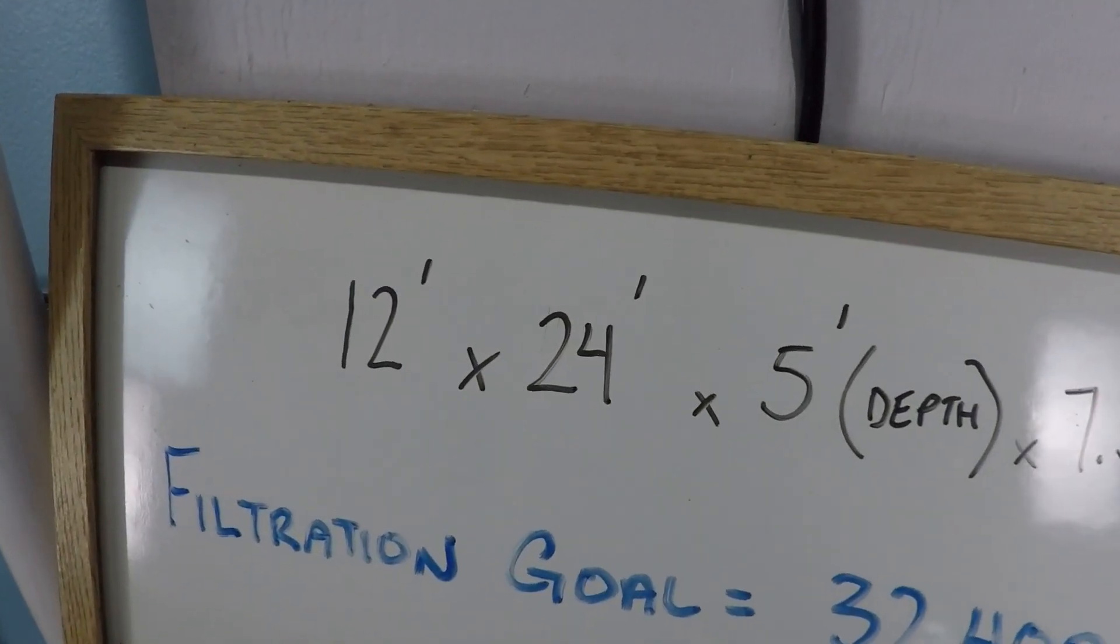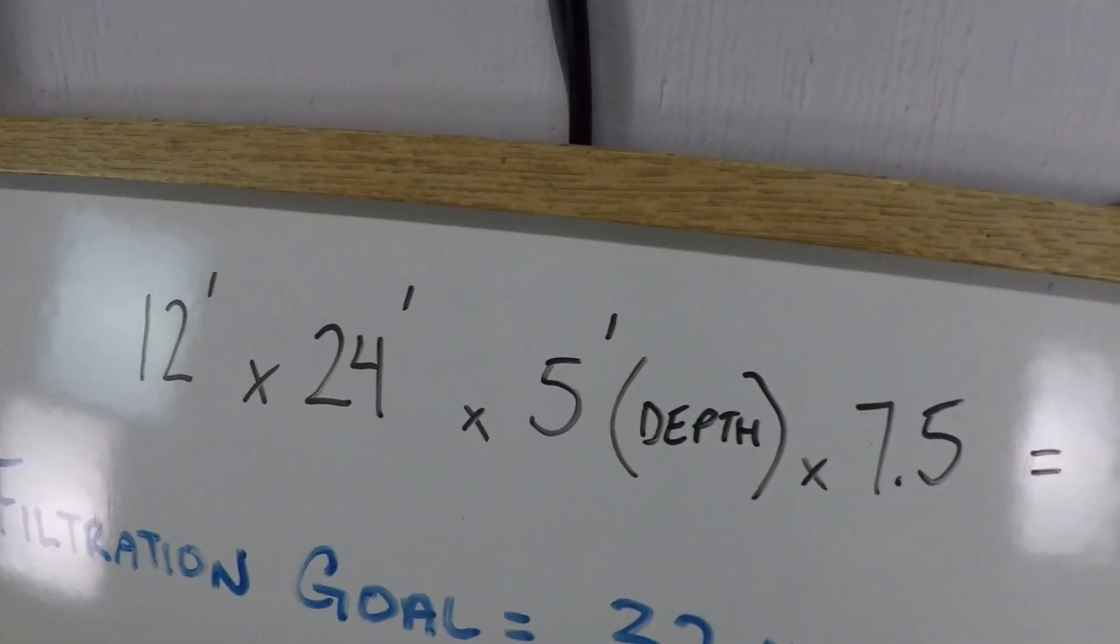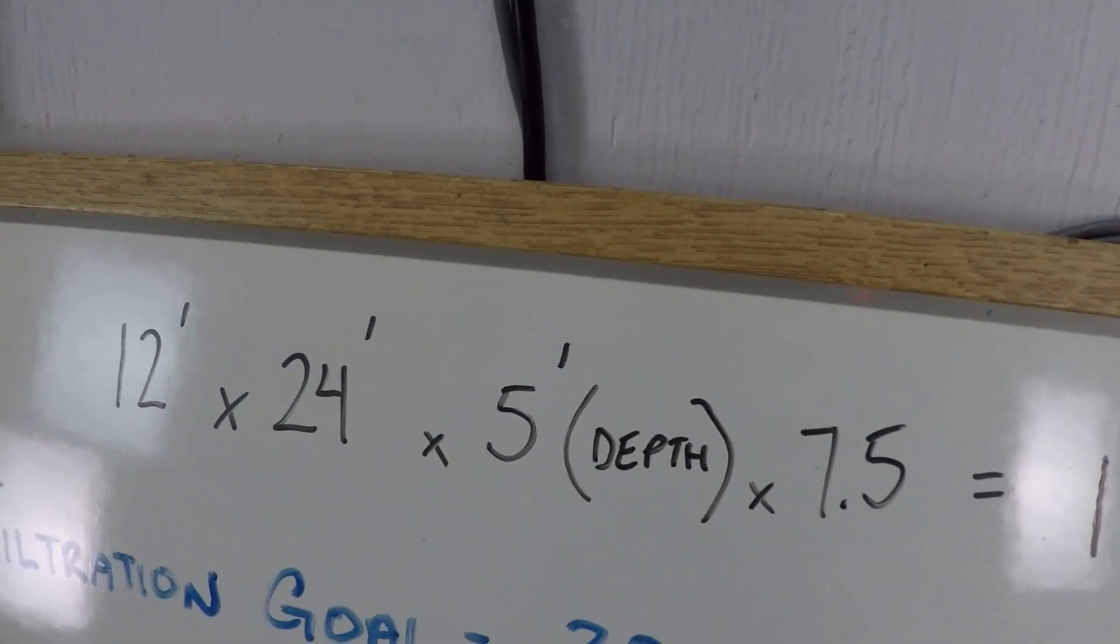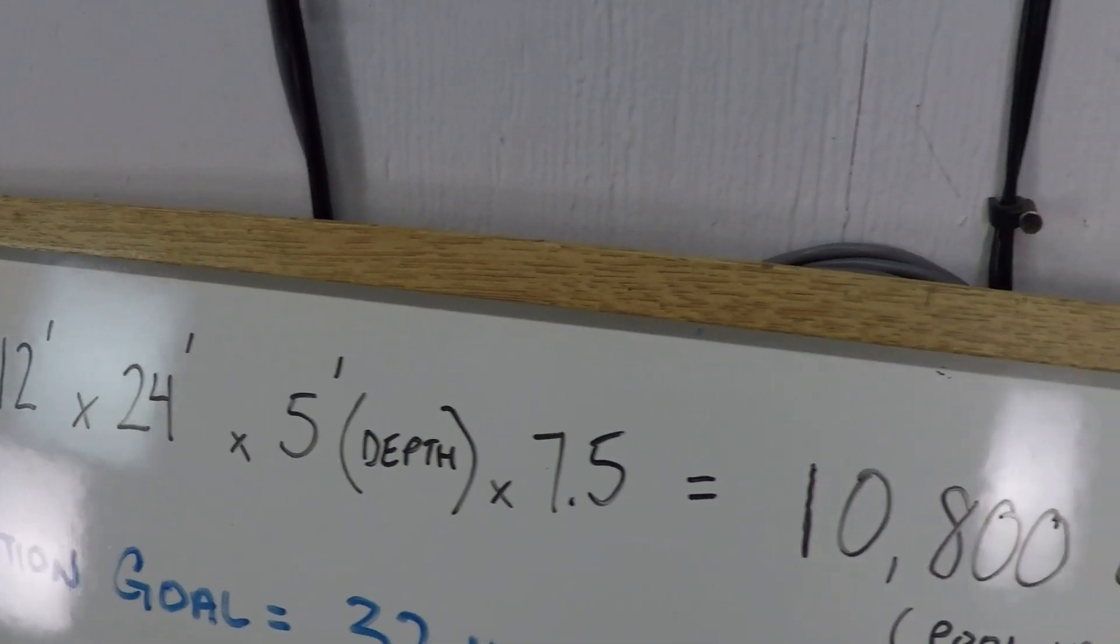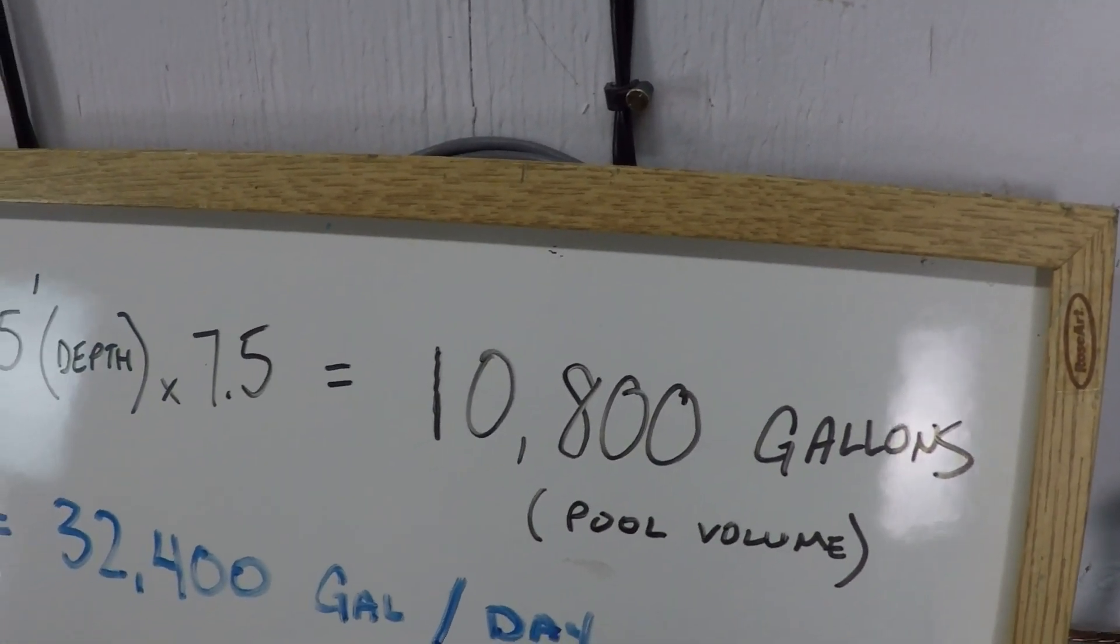So first things first, we're approximating a 12 by 24 foot swimming pool. This one has an average depth of five feet, which means it probably has a deep end about six feet deep or so. So that gives us an approximate calculation of 10,800 gallons for this swimming pool.